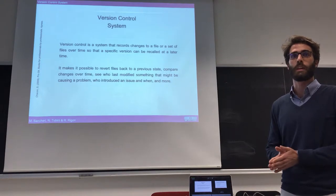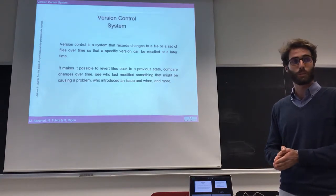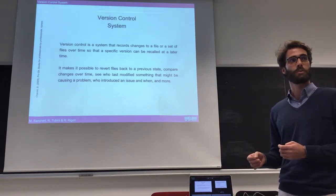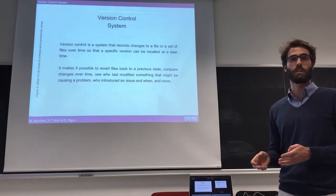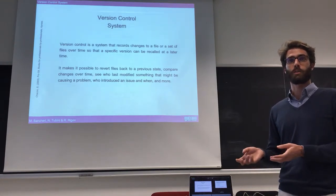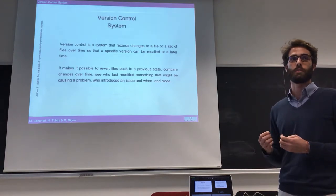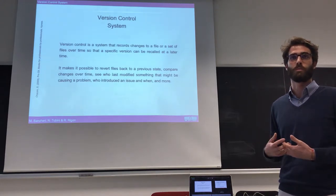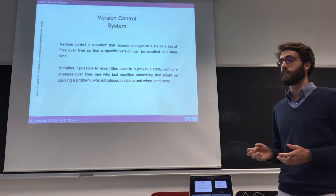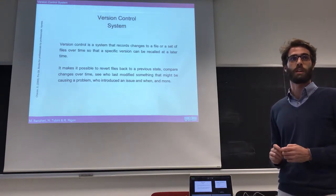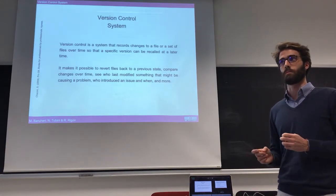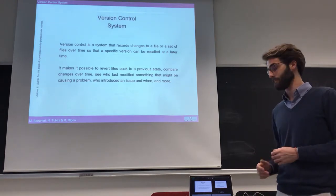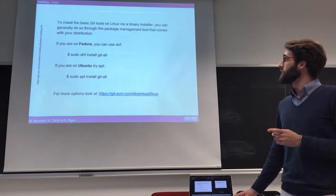Version control system means that when you work, you can memorize the history of your work. So when you perform some modification of your code, you can go back for debug or because you decide that the new development is not useful for you. Furthermore, with Git you can collaborate with other people, so when someone makes some modification you can track them in your history.